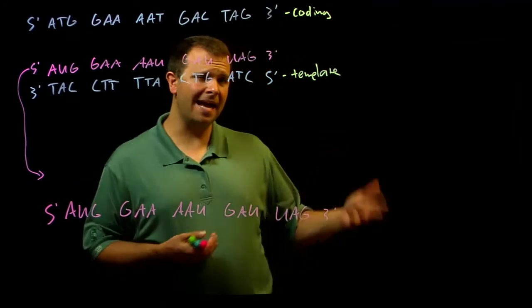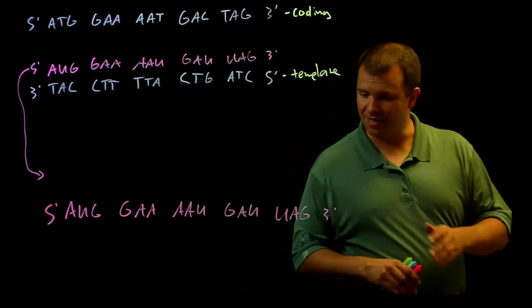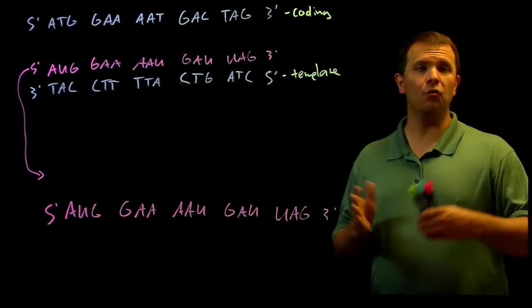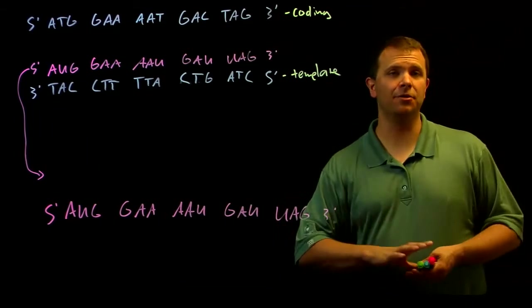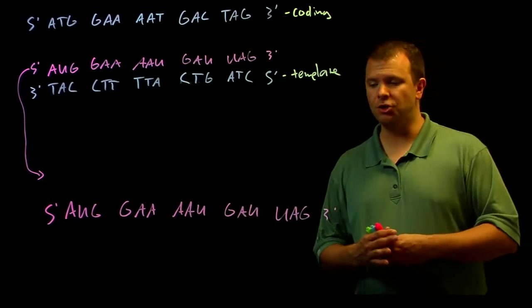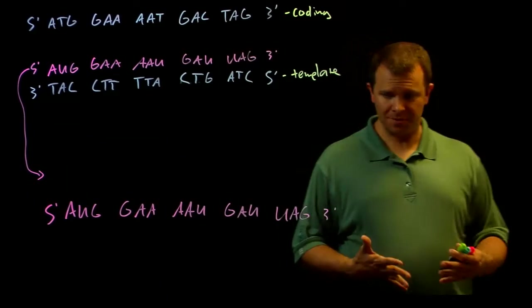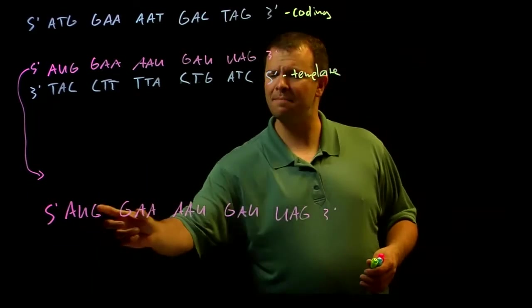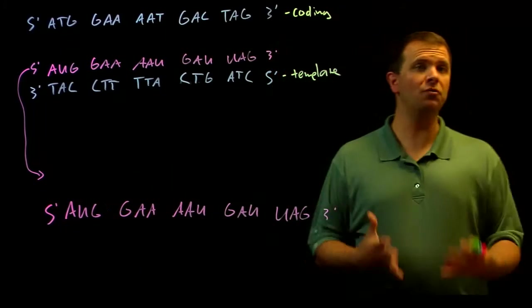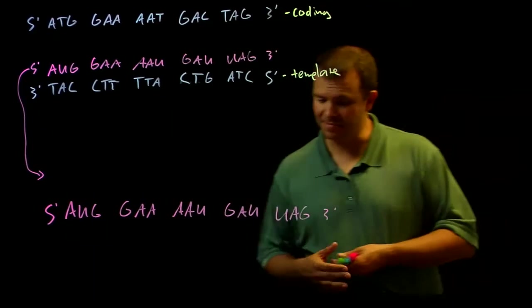There we go. And so now a process called translation happens. And so a ribosome, a macromolecular machine that does this, shows up, and it decodes every three bases, called a codon, into an amino acid.